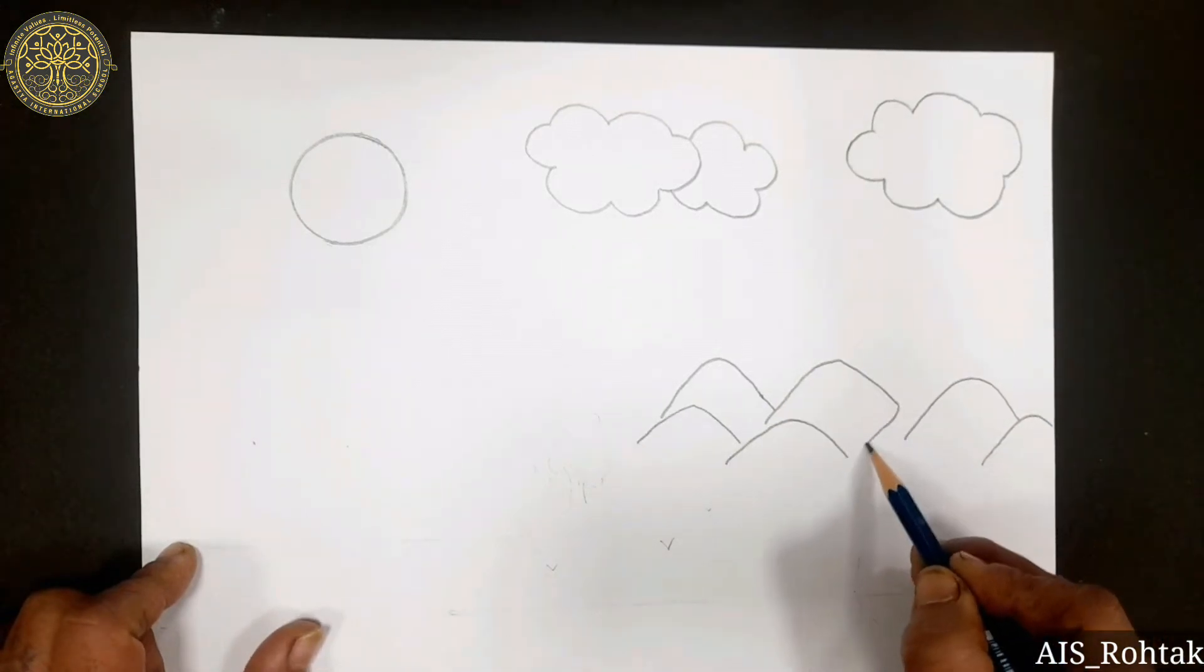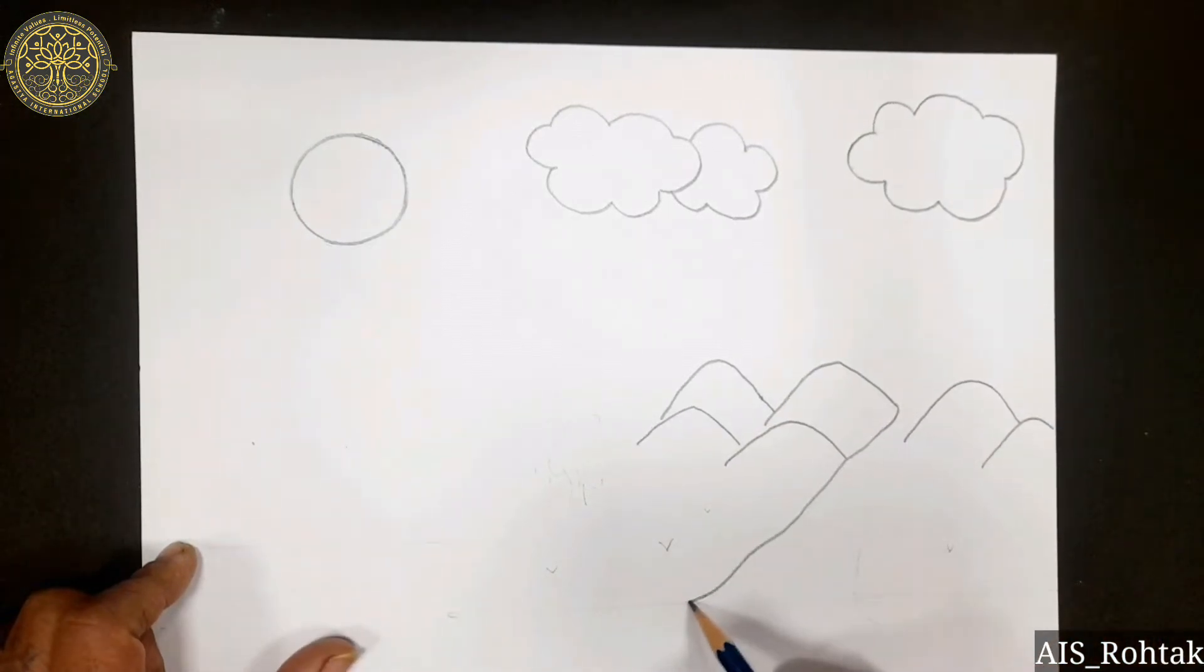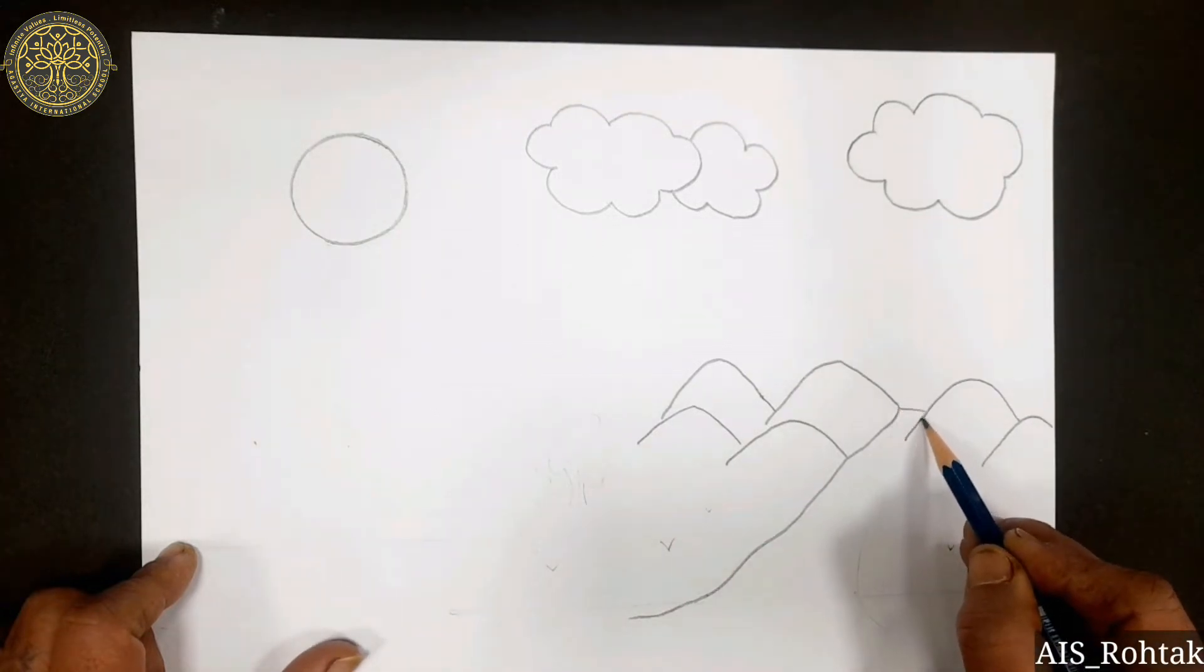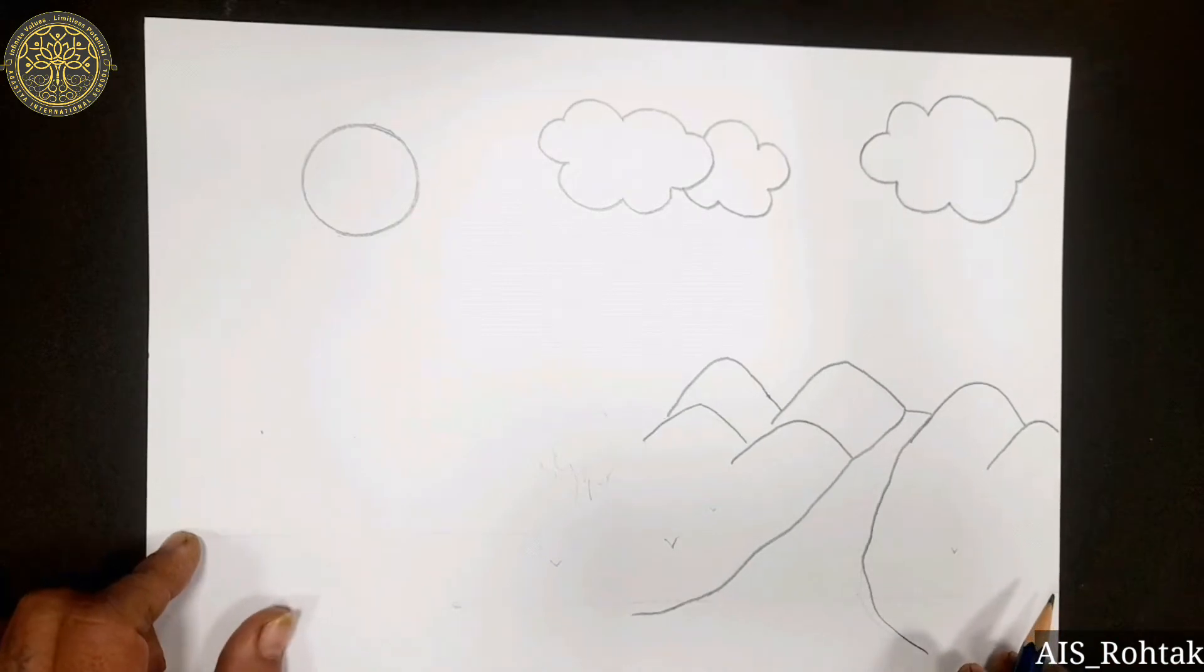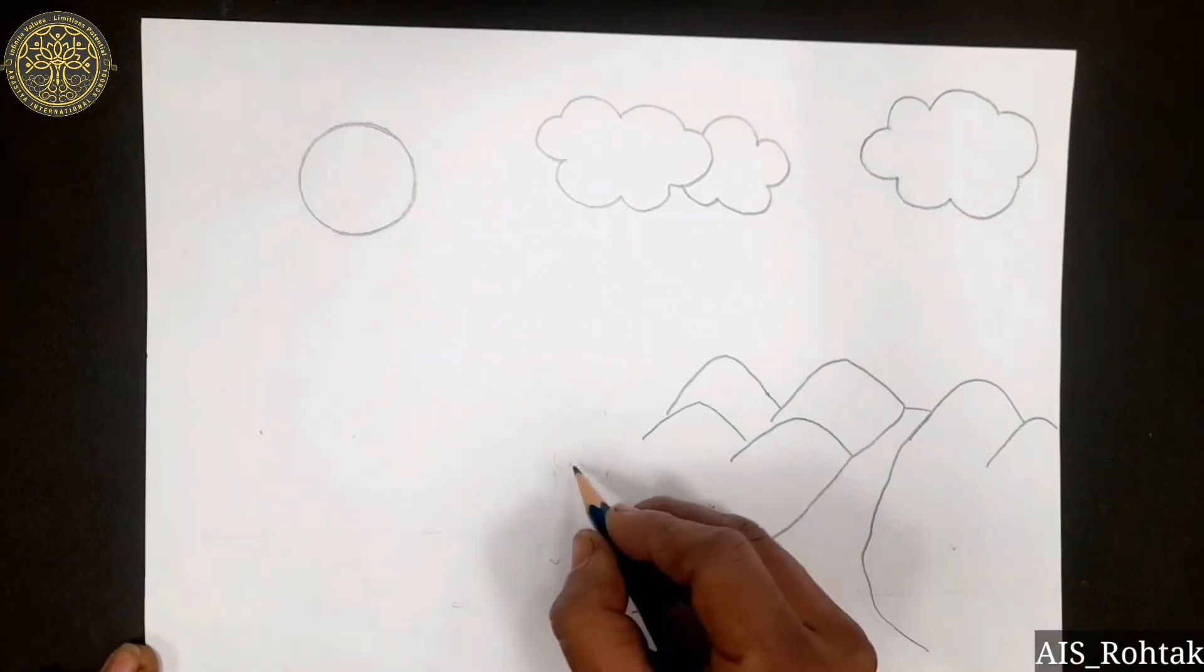Now draw two wavy lines in this way as we are drawing river. We are going to draw the mountain as ice is melting.